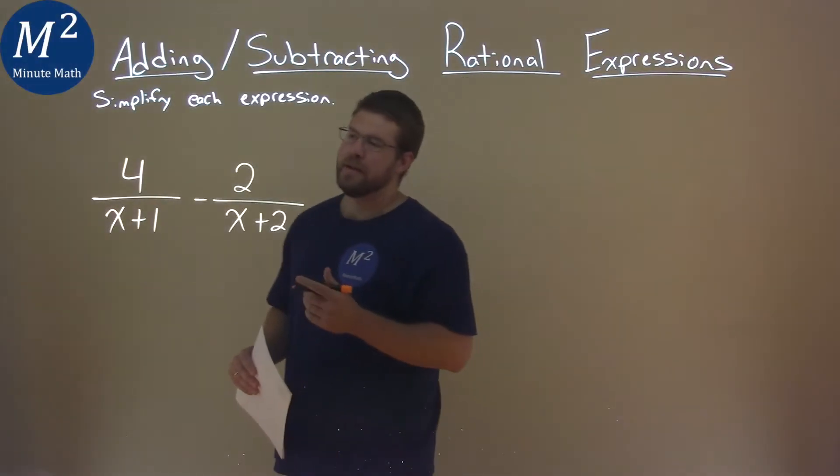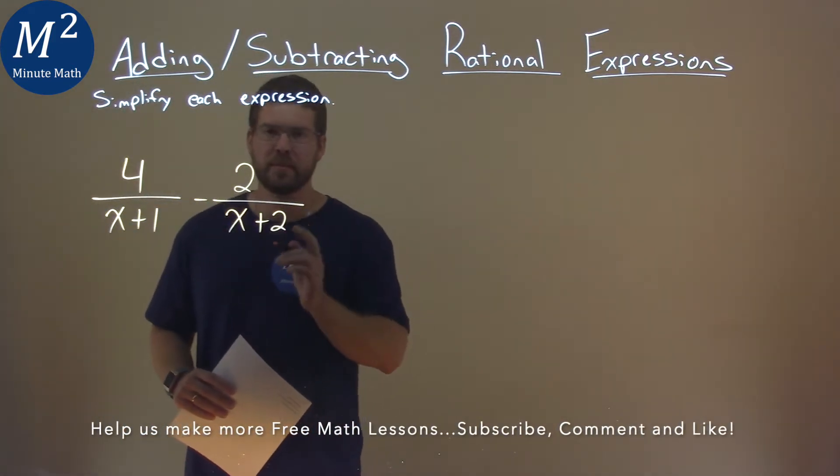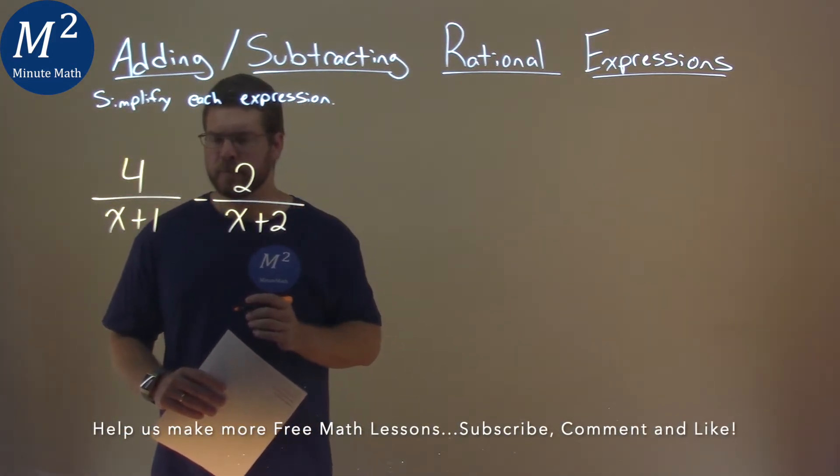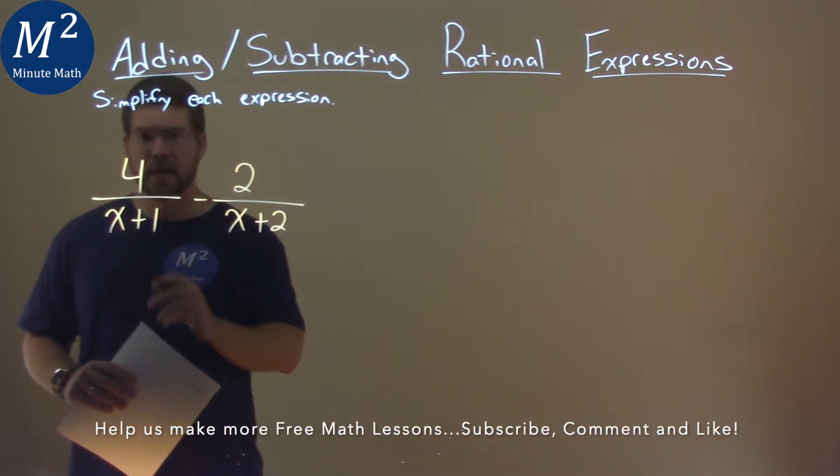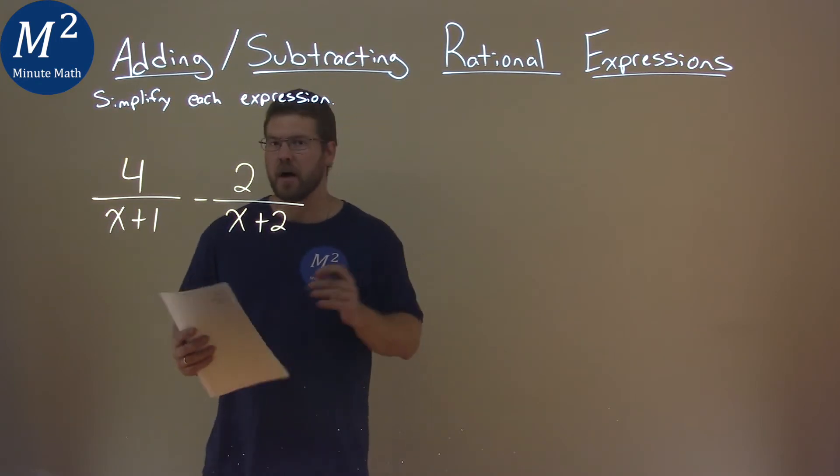We're given this problem right here, 4 over x plus 1 minus 2 over x plus 2, and we have to simplify this expression. Notice we don't have the same denominator here, so we can't add the fractions. So we have to now find a way to have a common denominator.